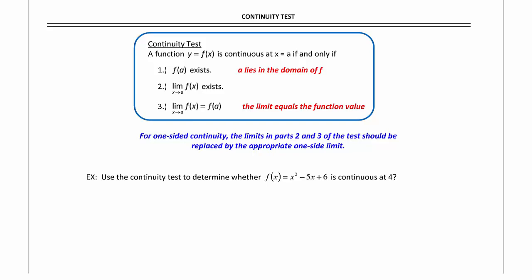So the first part is saying that a lies in the domain of f. The second one tells us that the limit exists, and the third one tells us that the limit equals the function value, which is our original definition of continuity of an interior point.